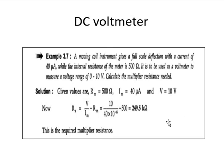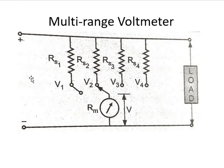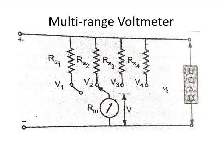This is all about the DC voltmeter and DC ammeter. The multi-range voltmeter uses multiple multiplier resistances — R_S1, R_S2, R_S3, R_S4 — connected to a switch. Depending on the voltage range required for the load, you connect the meter to V1, V2, V3, or V4 accordingly. This is the multi-range voltmeter.